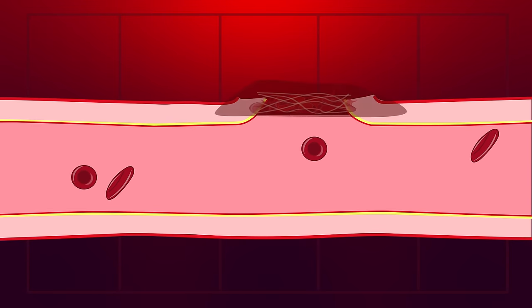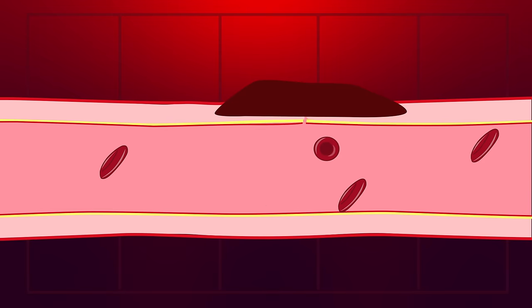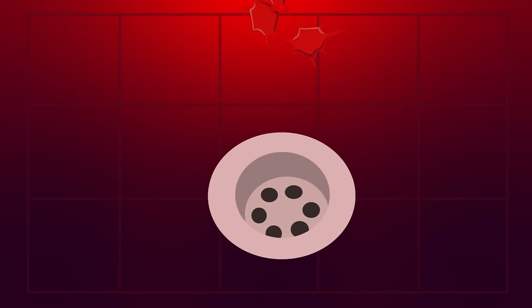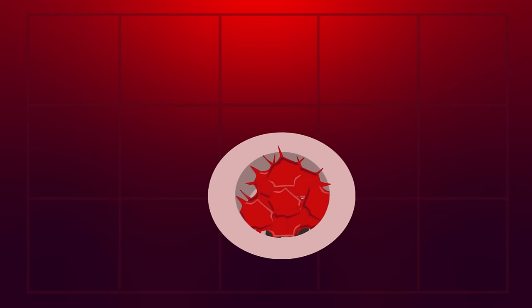The clot develops into a scab, which protects the wound as it heals and new layers of skin form underneath. So really, all a scab is, is just platelets trapped in the fibrin mesh. It is like putting a plug in a sink. When the new skin is fully formed, the scab will fall off, revealing the lovely brand new skin underneath.